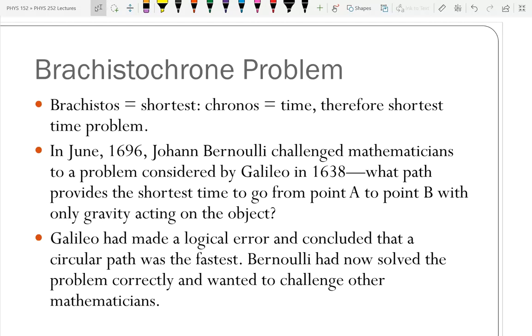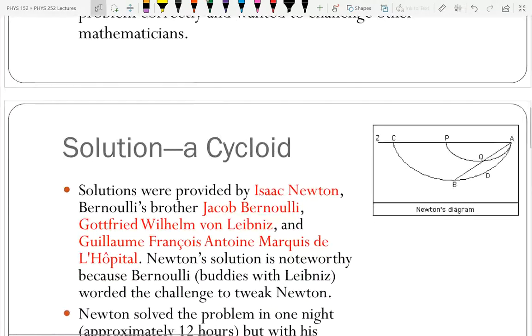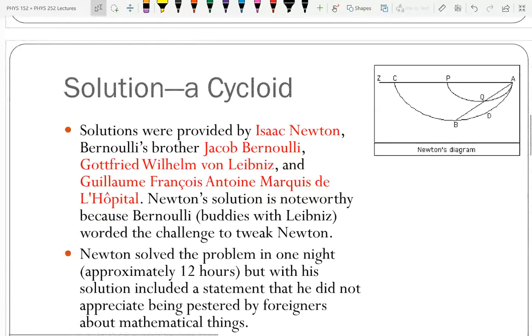He sets this out and gets solutions from, among others, Isaac Newton, Bernoulli's brother Jacob Bernoulli, Gottfried Wilhelm von Leibniz, and Guillaume François Antoine Marquis de l'Hôpital. L'Hôpital is famous for l'Hôpital's rule, and was one of the early formulators of calculus.